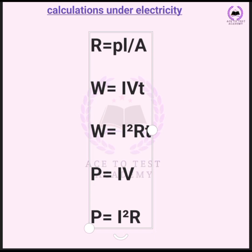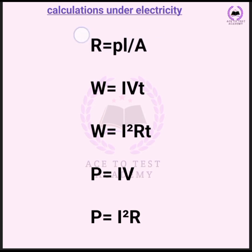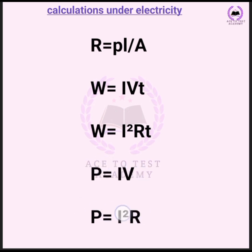The resistance formula using resistivity: R equals resistivity (ρ) times length (L) over area (A). If the question gives you the radius instead of the area, calculate the area first, then apply this formula. Also remember: work done W = IVt; current I = V over R; power P = IV, and also P = I squared R.